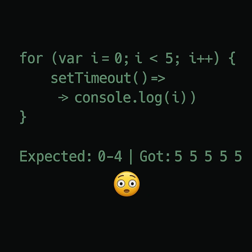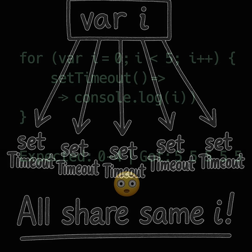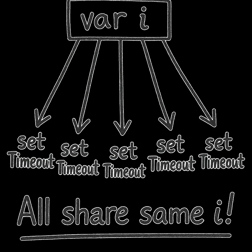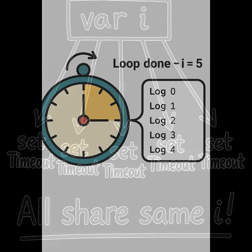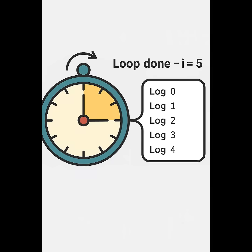Looks fine, right? But var is function scoped, not block scoped, so all five timeouts share the same i. By the time the timeout runs, the loop is over. i is already five. All logs just echo that final value.